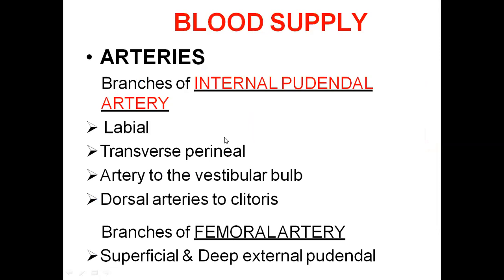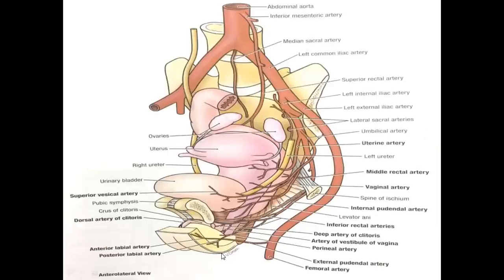Coming to the blood supply of the external genitalia. The branches of the internal pudendal artery include the labial artery, transverse perineal artery, artery to the vestibular bulb, and dorsal arteries to the clitoris. Branches of the femoral artery include the superficial and deep external pudendal arteries. The abdominal aorta gives rise to the common iliac, which divides into external iliac and internal iliac. Internal iliac branches and femoral artery branches supply the vulva and vagina.